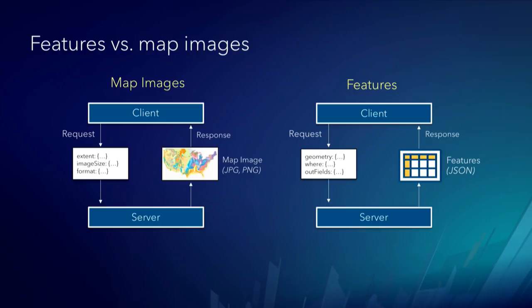When a client requests map images, it typically specifies the extent to draw, the image size, resolution, and format — JPEG, PNG. That's literally what gets sent back, and these are often very small. They can be transparent because they overlay with other images if they're PNGs. Even if you're drawing millions of features — by the way, pro tip: don't — you're getting a 10-kilobyte PNG with a whole bunch of dots on it.